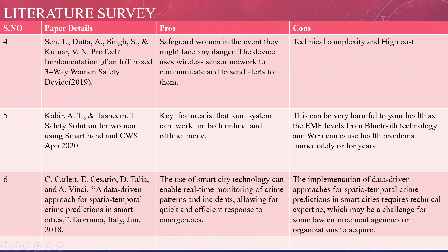The fourth paper by Senti Dutta, A. Singh, and Kumar V.N. is titled 'Protect: Implementation of an IoT-based Three-Way Women Safety Device' (2019). The pros are that it safeguards women in the event they face danger, using a wireless sensor network to communicate and send alerts. The consequence is technical complexity and high cost. The fifth paper by Kabir E.I.T. and Tasneem T. is titled 'Safety Solutions for Women Using Smart Band and CWS App.' A key feature is that the system can work in both online and offline modes. The consequence is potential health concerns from EMF levels emitted by Bluetooth and Wi-Fi technology.